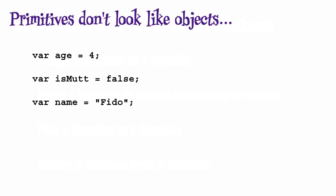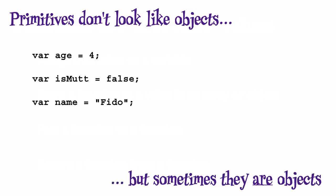We know that these are primitive values in JavaScript, in other words, they're definitely not objects, and yet, sometimes they are objects. The best example of this is a string.